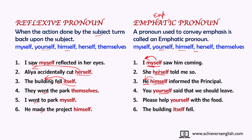In emphatic pronouns, just after the subject, the pronoun is used to give full pressure on it — 'I myself saw him coming,' 'She herself told me so.' In reflexive pronouns, the pronoun comes after the verb: saw, cut, fell — and then the pronoun follows. In emphatic pronoun, 'The building itself fell' puts pressure on 'building,' while in reflexive it is 'The building fell itself.' The words are the same but placement and emphasis differ.